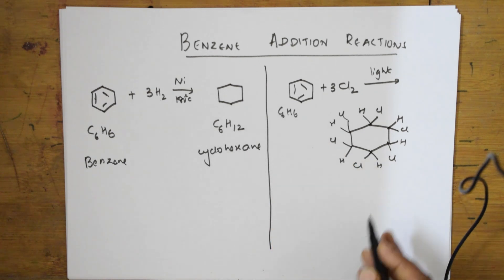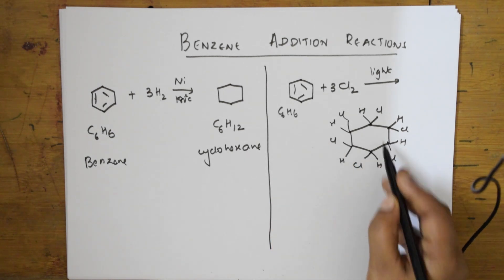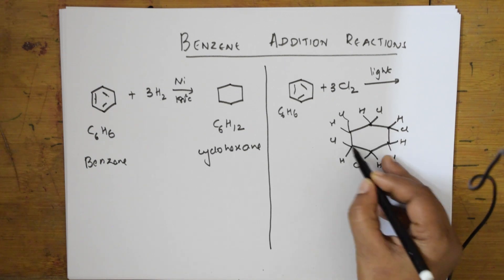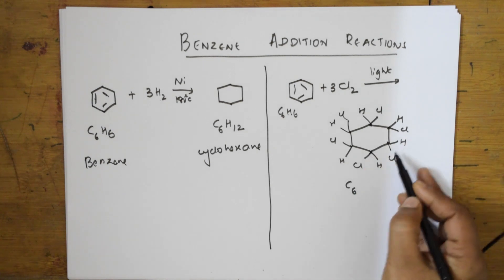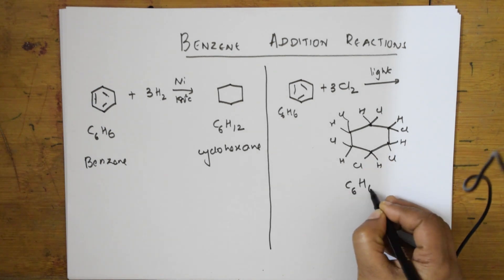The formula for this is C6H6. Let us count how many carbons: C6. How many hydrogens? Six hydrogens. How many chlorines? Six chlorines.